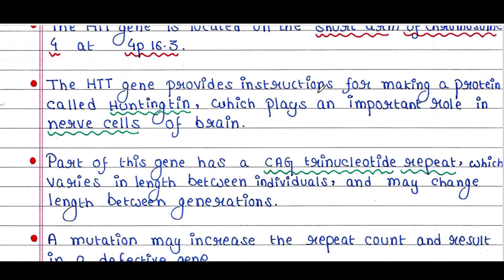The HTT gene provides instructions for making a protein called huntingtin, which plays an important role in nerve cells of the brain. Part of this gene has a CAG trinucleotide repeat which varies in length between individuals and may change length between generations. For example, your father may have 16 such repeats and you may have 15. The CAG repeat is a chunk of the HTT gene which contains CAG repeated sequentially.